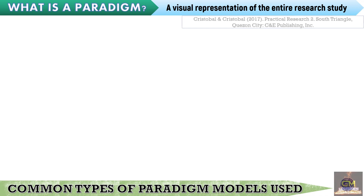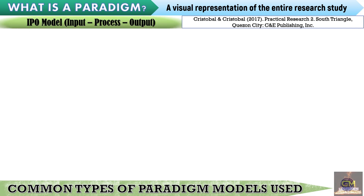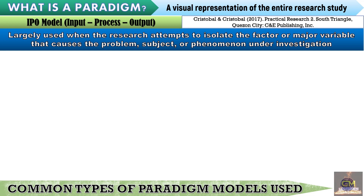In line with this, Cristobal and Cristobal in 2017 in their textbook have given us some examples of the common types of paradigm models which are used. The first one is the IPO model, also known as the input-process-output. The IPO model is largely used when the research attempts to isolate the factor or major variable that causes the problem, subject, or phenomenon under investigation.